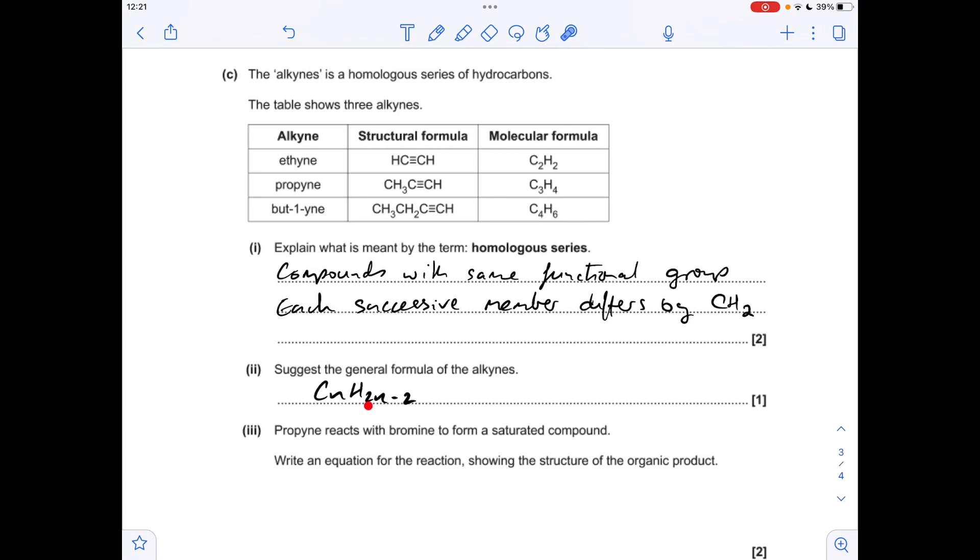General formula of the alkynes is going to be CNH2N minus 2. And for the next part, we're told propyne reacts with bromine to form a saturated compound.